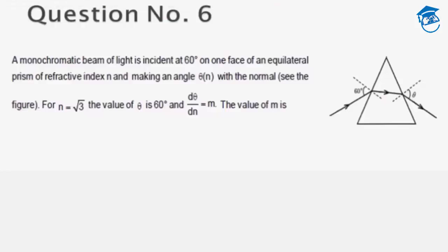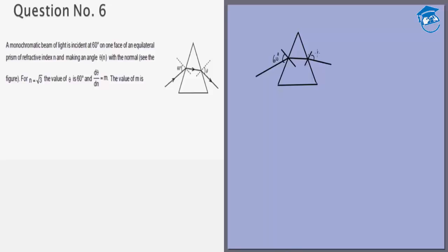Let's look at the next question. We are given an equilateral prism, that means all angles are 60 degrees, and we have a ray of light going in at 60 degrees and then it is going like this and we want to find out the relationship of the emergent angle.